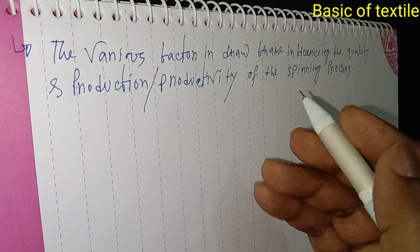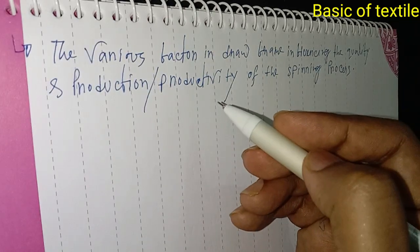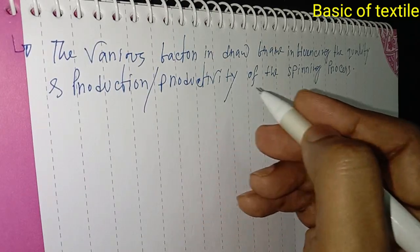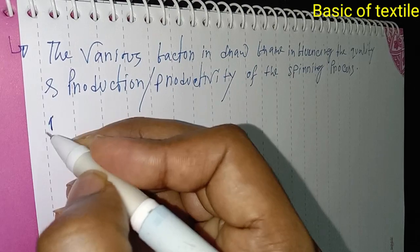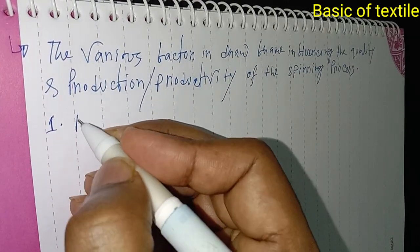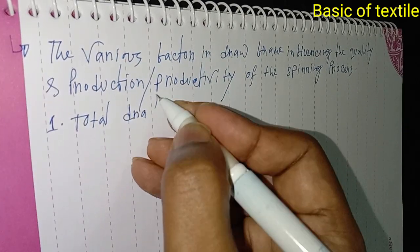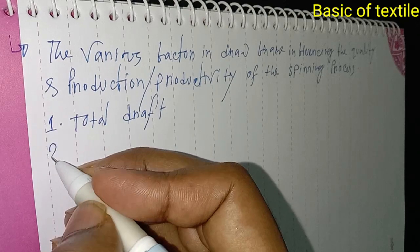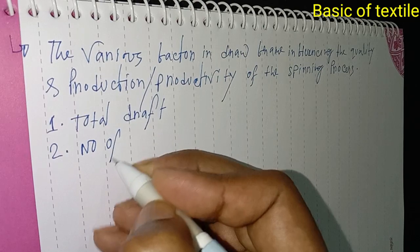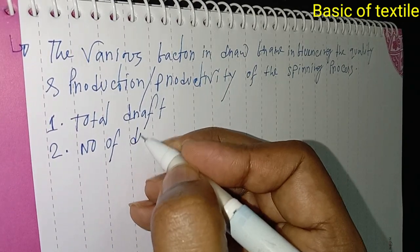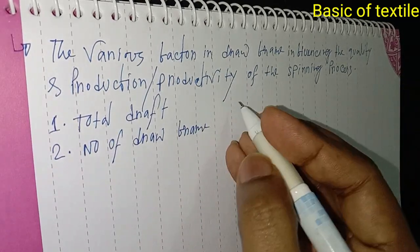The factors influencing quality and productivity of the draw frame machine are as follows. Number one: total draft. Number two: number of draw frame passes.